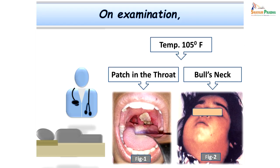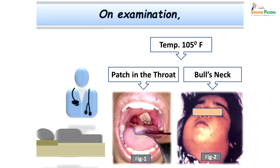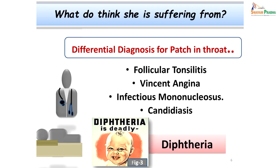When she was brought to the hospital, on examination we found she had high-grade fever, and on throat examination using a tongue depressor we could observe a patch in the throat which was leathery in nature — a necrotic patch — with highly inflamed surrounding pharyngeal tissues. Her neck was also swollen. These were the two important findings on examination.